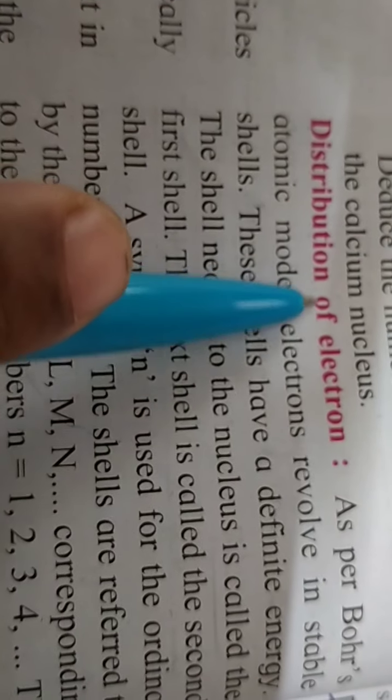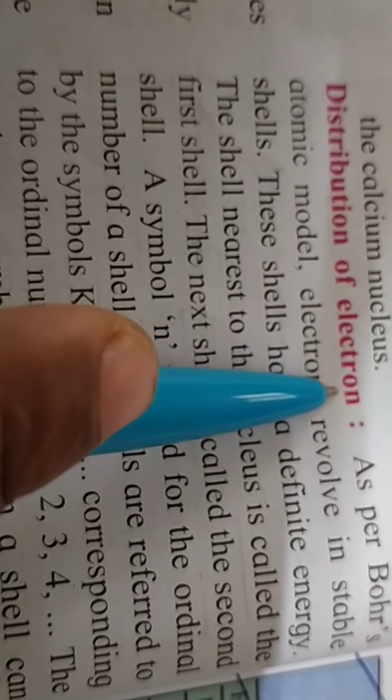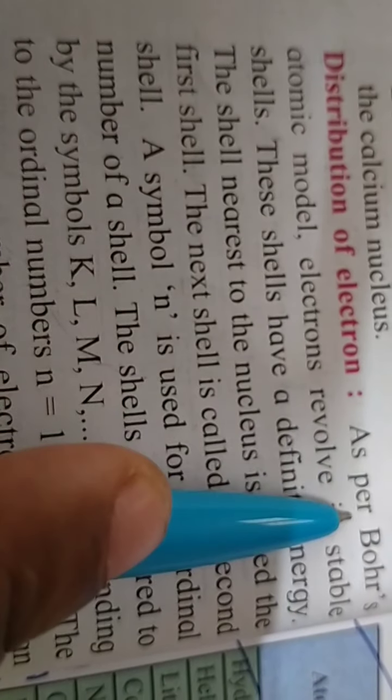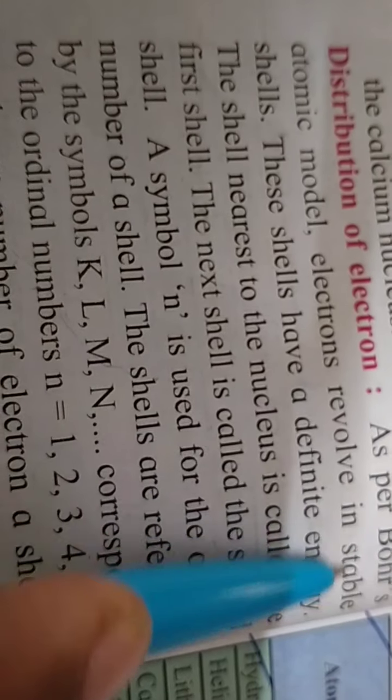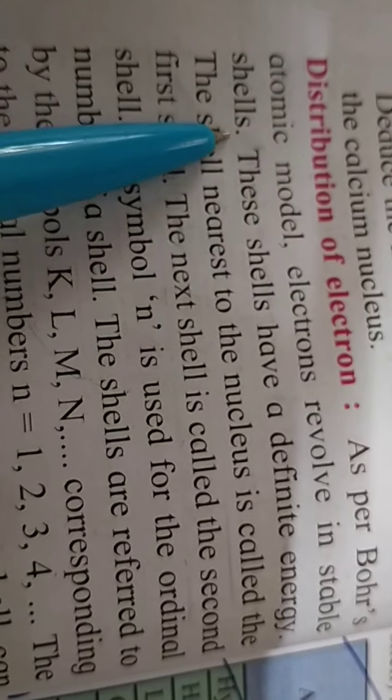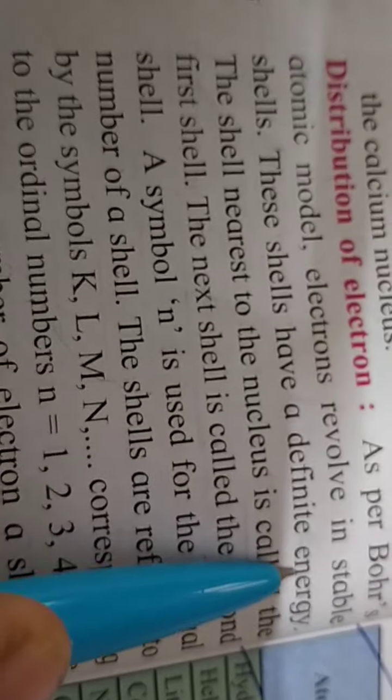Today we have an important and interesting topic: distribution of electrons. As per Bohr's atomic model, the electrons revolve in the stable shells. Electrons rotate in shells. These shells have a definite energy.